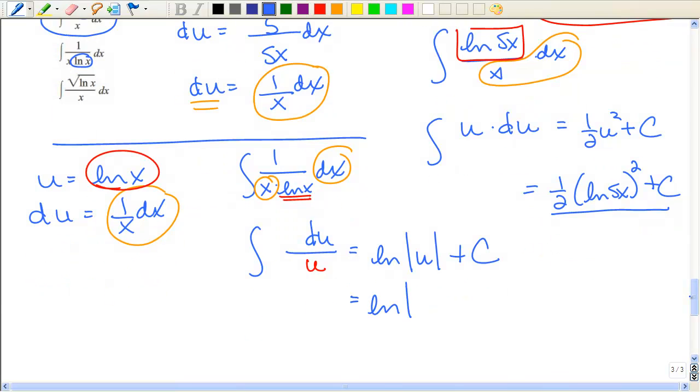What was u? The natural log of x. So we have the natural log of the natural log, which is kind of bizarro. So I'm going to leave that one for your thought. But again, any time you have the natural log in there, let that be u.